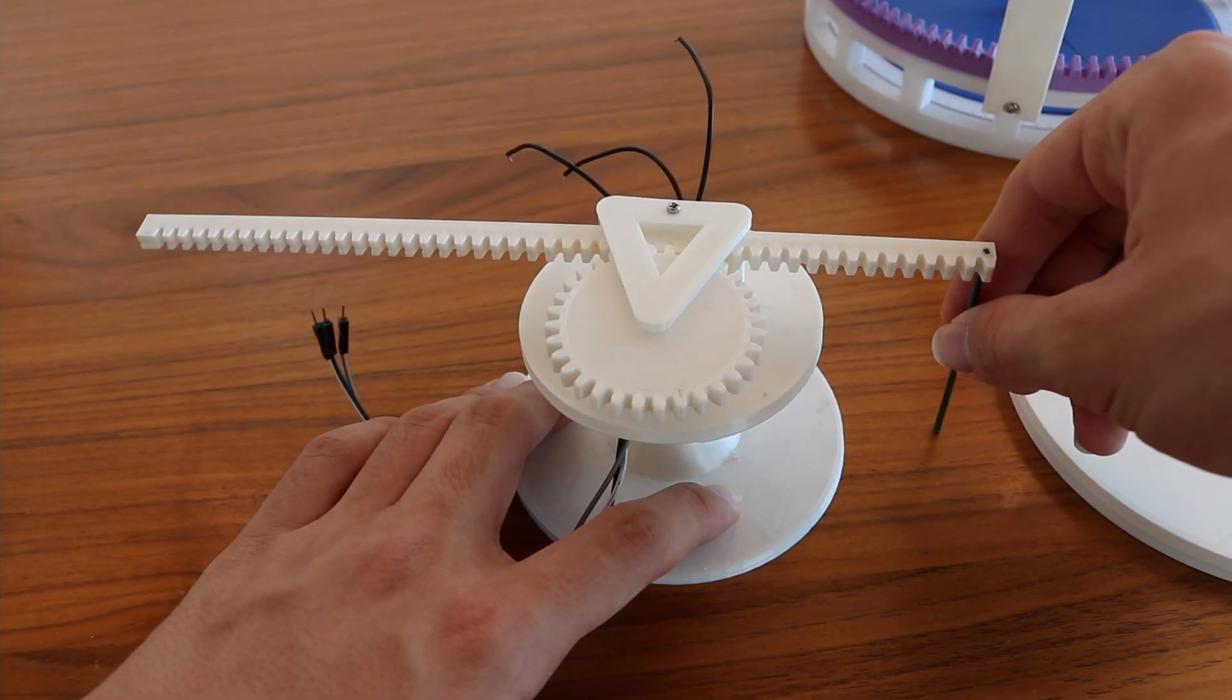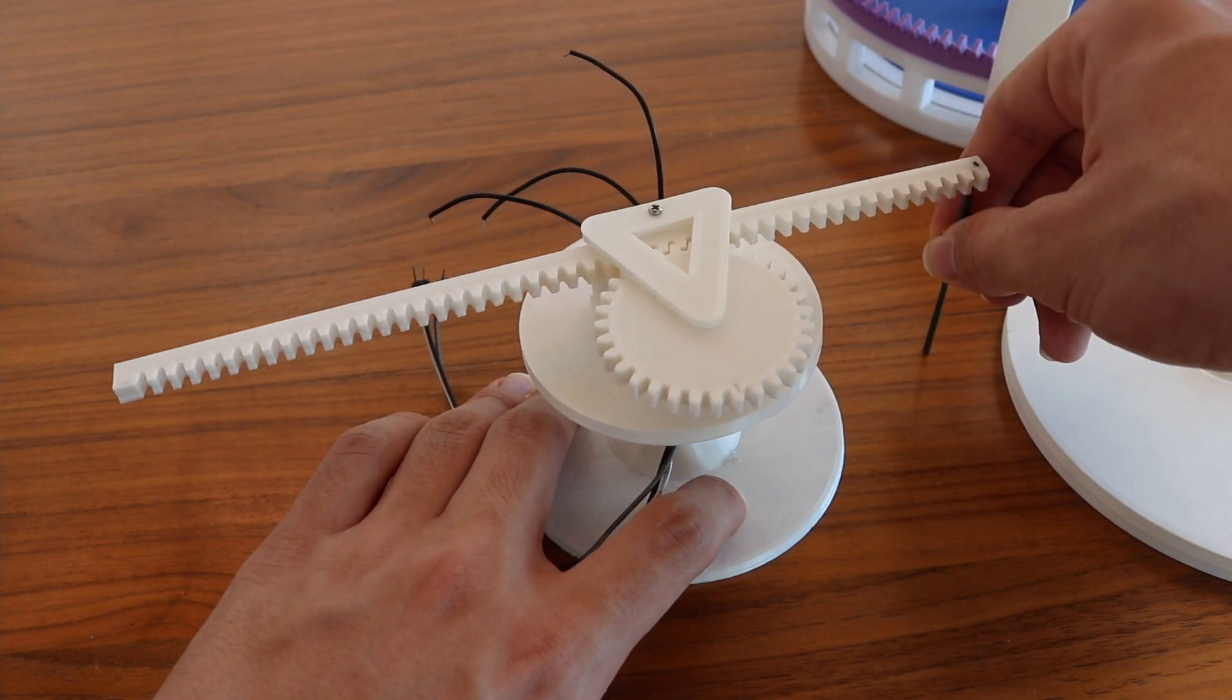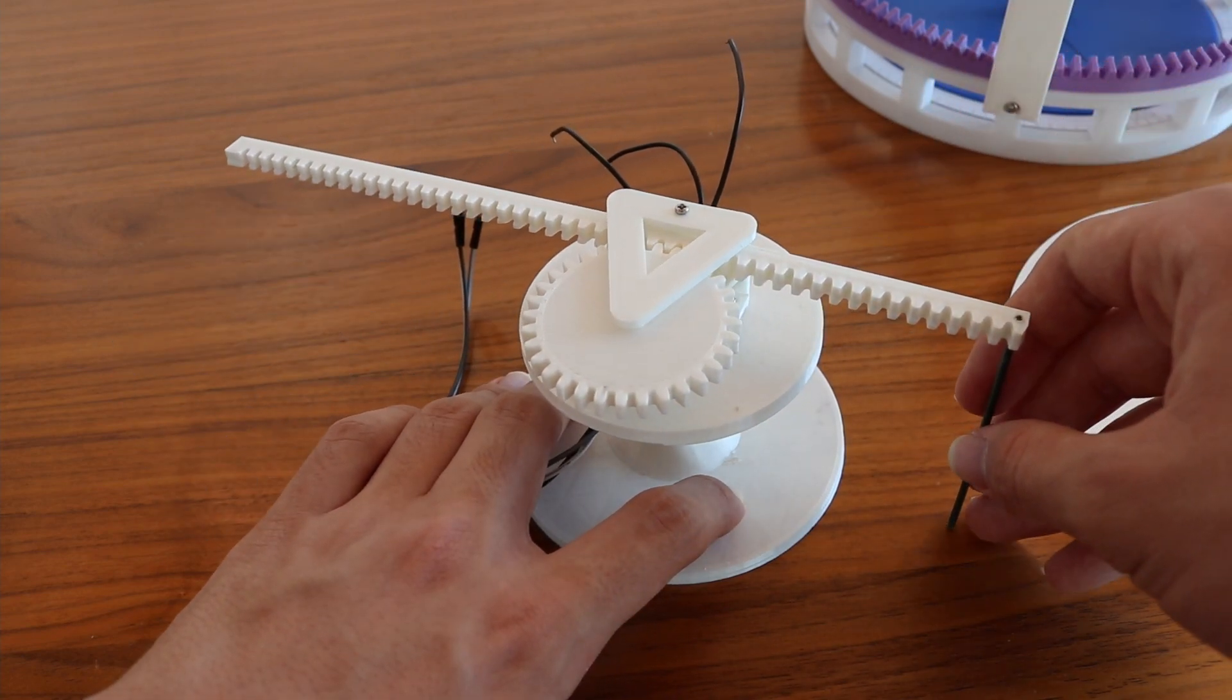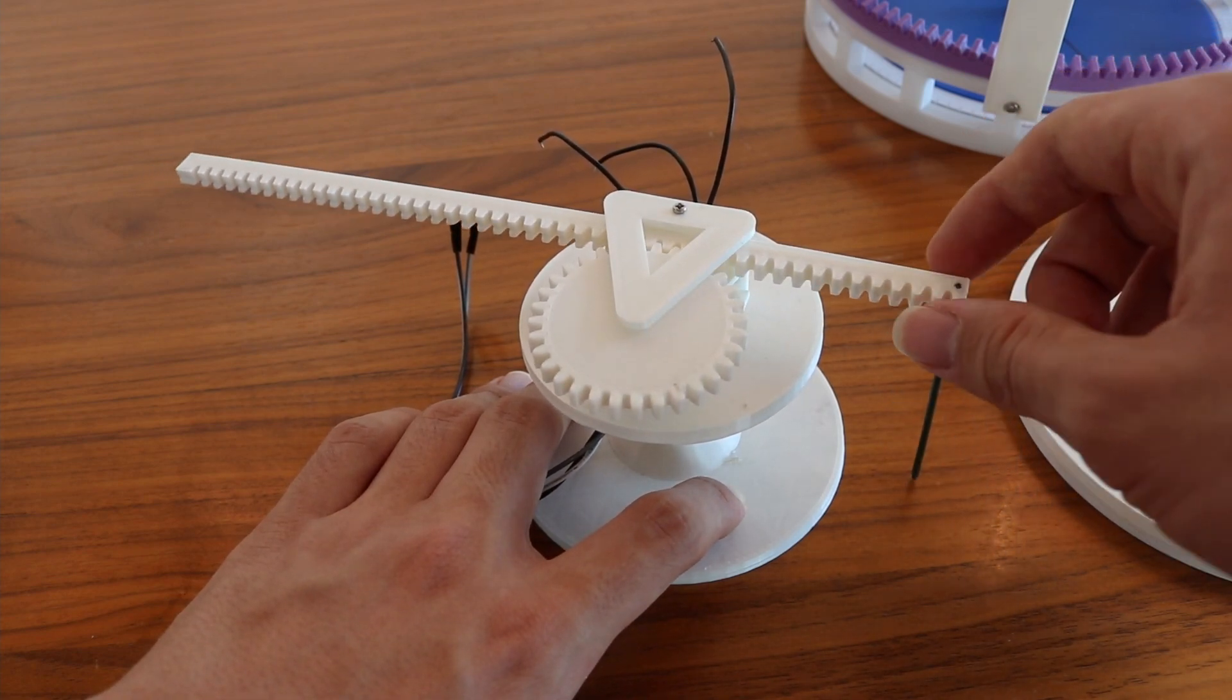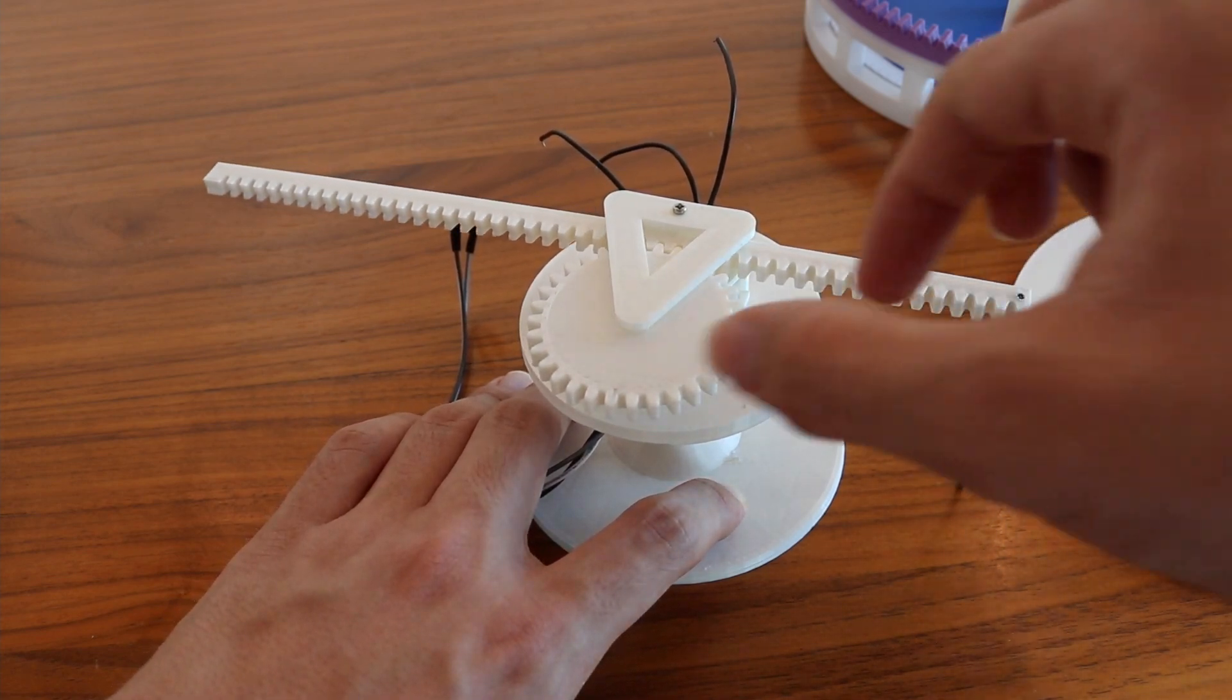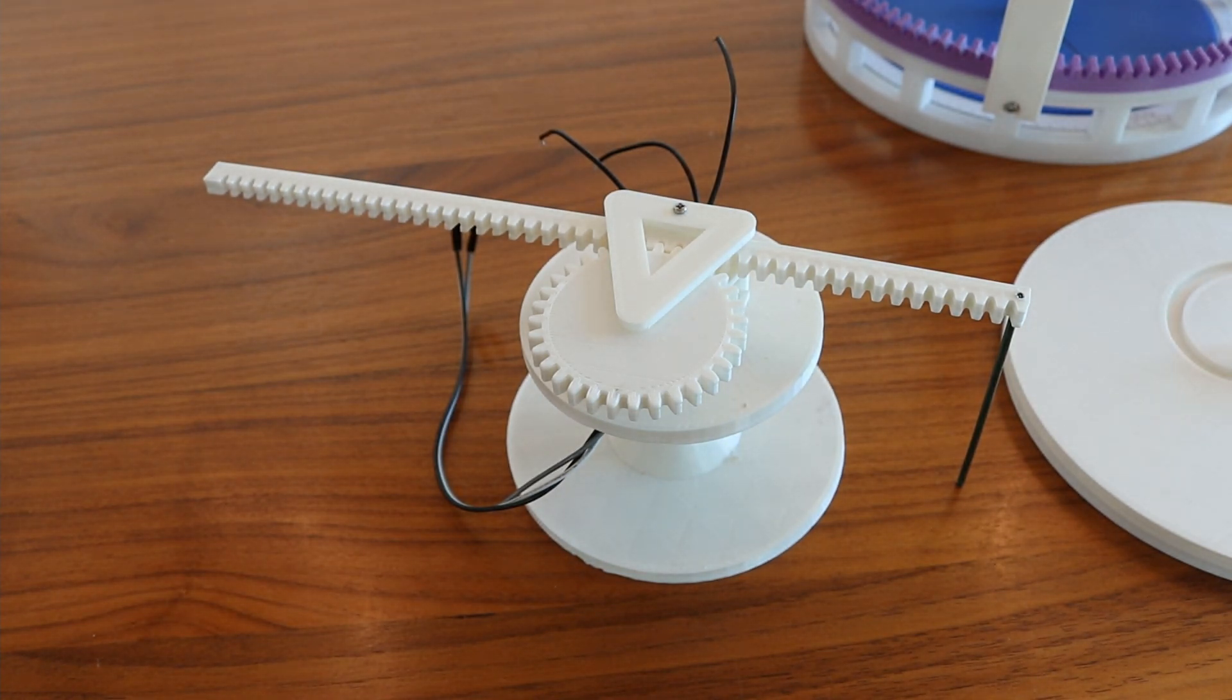Since we use this pointer to trace the curve that we want to find the area of, the radius at any point in time can be measured by the movement of this rack. And as this rack moves in and out, it turns this gear. In the final design, this gear then goes on to turn the next mechanism, but in this prototype, it's connected up to a rotary encoder and can be read by an Arduino.